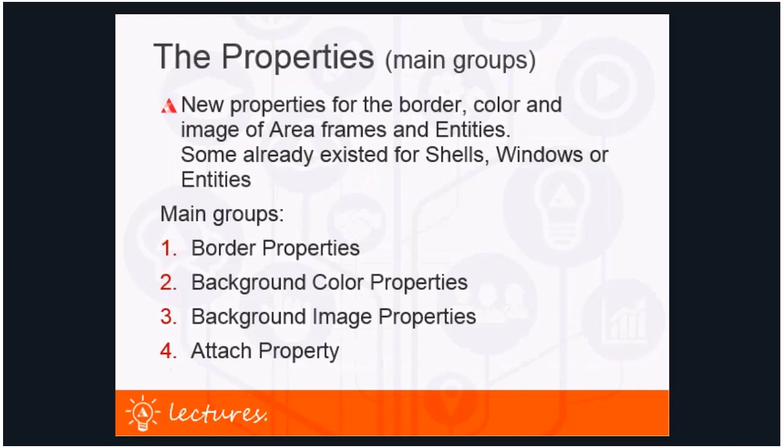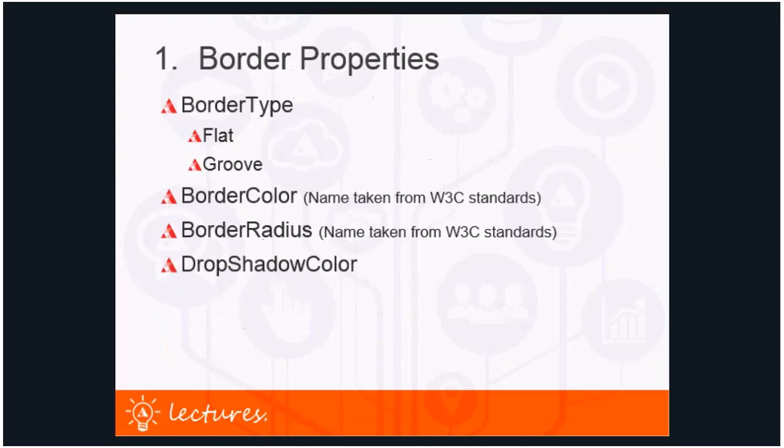I will go over the newly added properties with you. There are new properties for border color and image of the area frames and entities — some already existed for shells, windows, or entities. The main groups of newly added properties are: border properties, background color properties, background image properties, and the attached property.